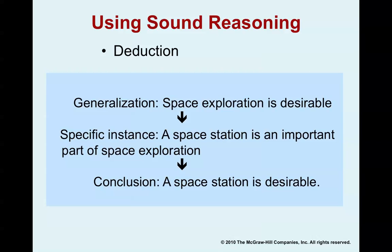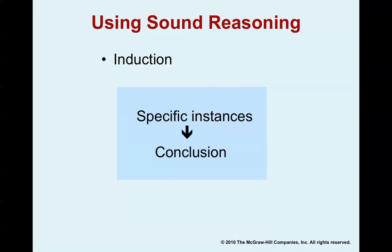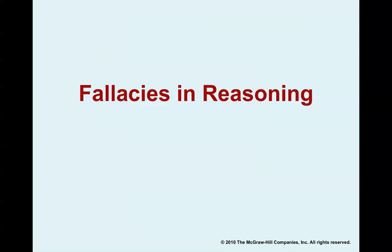For deduction, let's start with the generalization that space exploration is desirable. A specific instance is that a space station is an important part of space exploration, so one may deduce that a space station is desirable. On the flip side, there's induction — a type of reasoning that starts with a specific instance and moves to a generalized conclusion. For example, if a physician suddenly sees dozens of patients with a skin rash, they can conclude the community is suffering from an outbreak of infectious disease. Induction is the method often used by scientists.